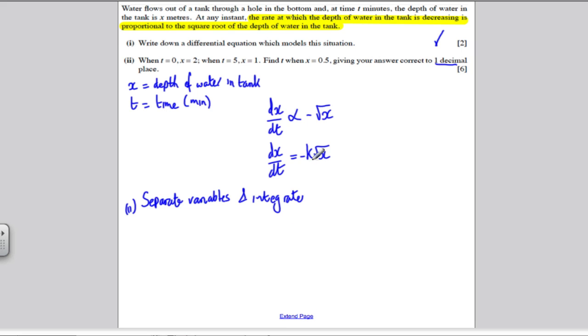Let's have a go. Divide both sides by the square root of x and multiply both sides by dt. I would get one over the square root of x dx, and the integral of that is equal to the integral of minus k dt. And just before I go ahead and integrate this, I'm just going to write this in index form. So that's the integral of x to the minus a half dx, and I'm going to factorize out the minus k is equal to minus k the integral of dt.